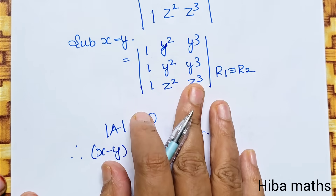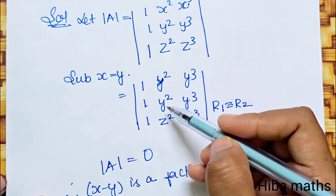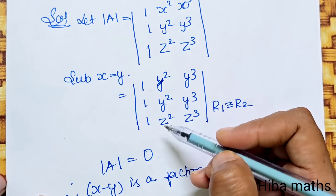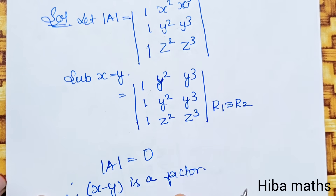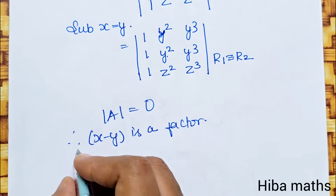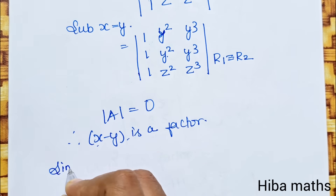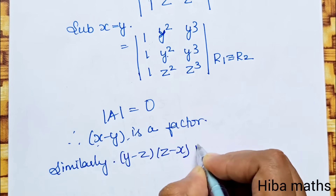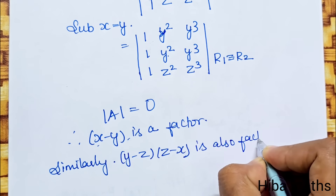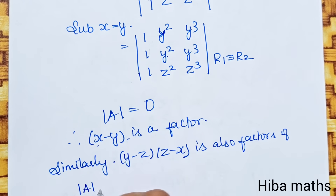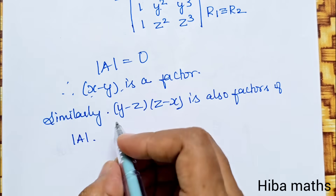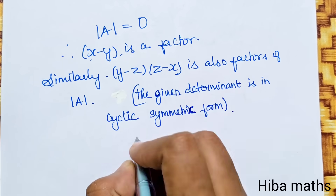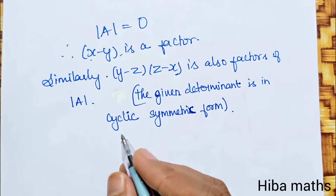This is a cyclic determinant. If we substitute y in place of x, or z in place of x, or y in place of z, we get the same result. Therefore, similarly, (y-z) and (z-x) are also factors of determinant A.